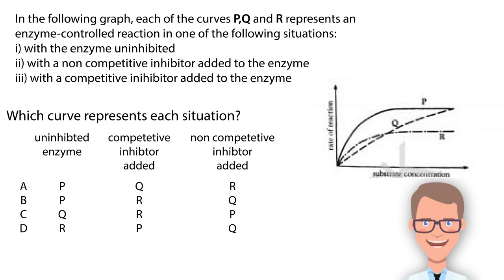Let's have a look at the options now. There are only two options that have P in uninhibited enzyme category so we remove C and D. Now let's have a look at line Q. In this plot we see that reaction hasn't stopped and is proceeding forward at a greater rate as substrate concentration increases. We know that the reaction inhibited by a non-competitive inhibitor stops eventually and is not affected by increase in substrate concentration. So this plot Q can be inhibited by competitive inhibitor only. This takes us to our answer which is option A.